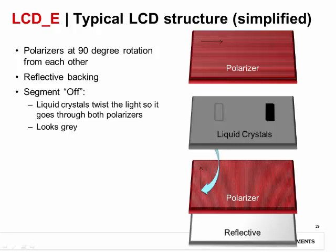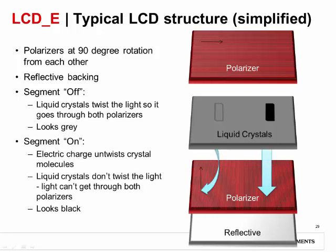This makes the segment look gray because most of the light is being reflected back out. If the segment is on, or black, there is a charge applied across the crystals in this segment. When a charge is applied, it causes the crystals to untwist, so the light goes through the first polarizer, but the crystals do not twist it. They just let it go straight to the next polarizer, where the light is all blocked because it is still 90 degrees from the second polarizer. Because the light cannot get through, it doesn't make it to the reflective backing and is just absorbed, making the segment look black.